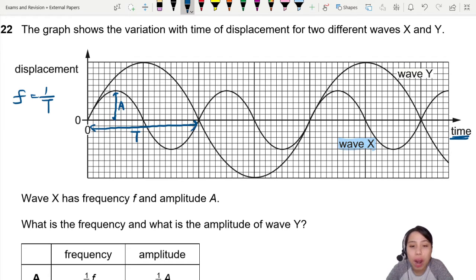Then you have wave Y. What is the frequency and what is the amplitude of wave Y? So let's call this one wave Y. Give it a nice orange hue.